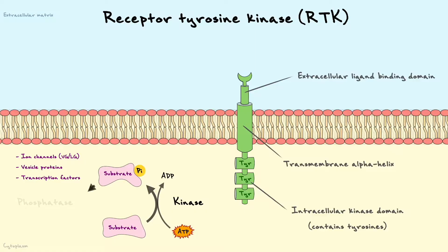The phosphorylation is then removed by special proteins named phosphatases. This phosphorylation reaction often occurs on tyrosine residues, and the receptor itself has a lot of these residues, which explains why it is called the receptor tyrosine kinase. Due to the fact that it has these tyrosine residues, the receptor can phosphorylate itself along with other proteins, but we will get back to that aspect shortly.